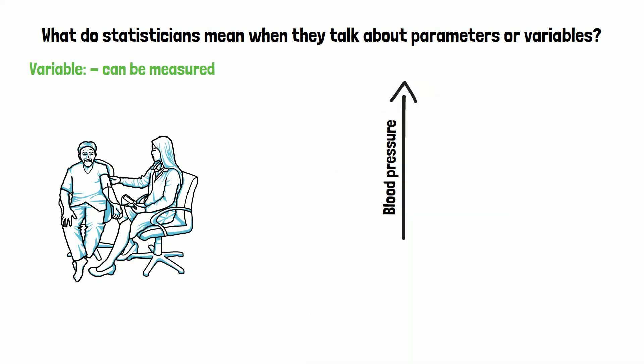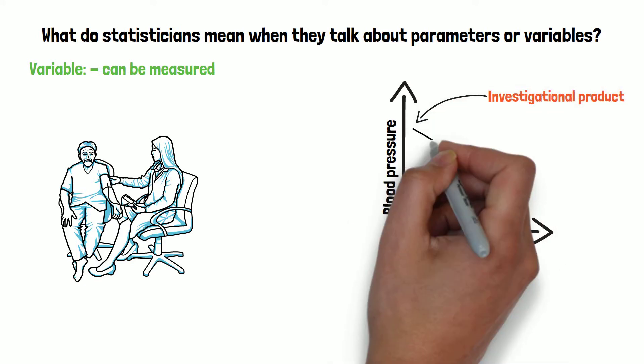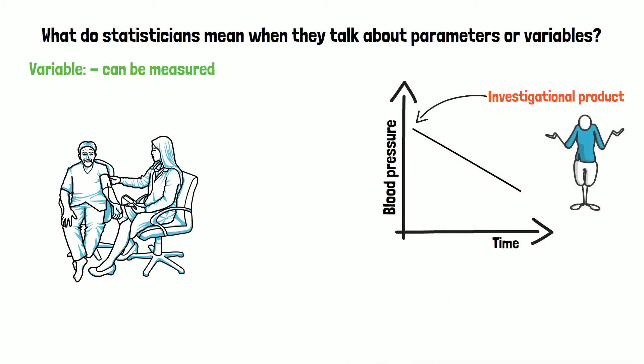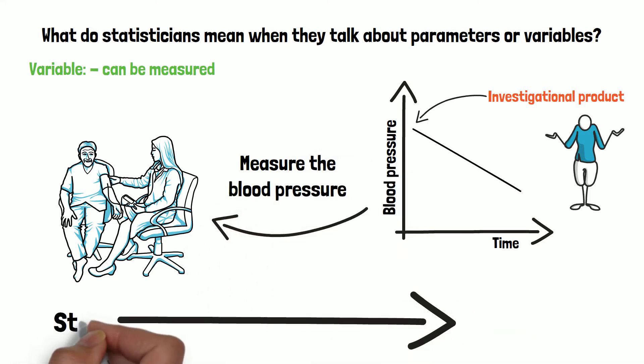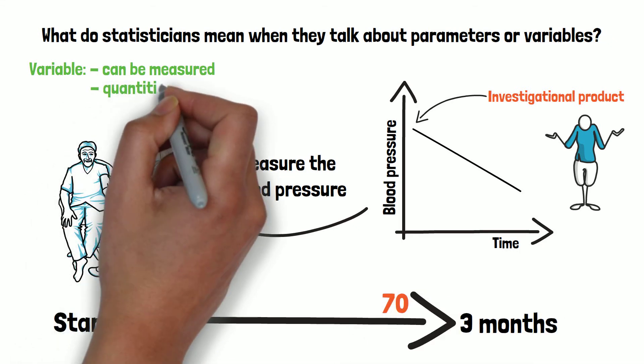Let's assume as the main objective of our study we are interested if the investigational product is decreasing the blood pressure over time. What we can do to answer our question easily is to measure the blood pressure once in the beginning of the trial and then again after the patient used the product, let's say after 3 months. We can compare these values or variables directly.